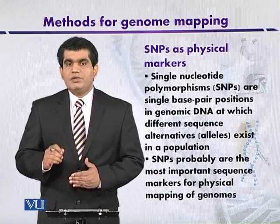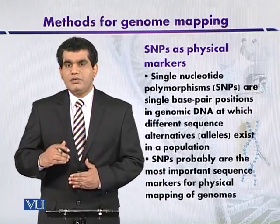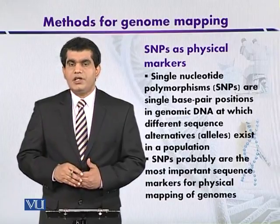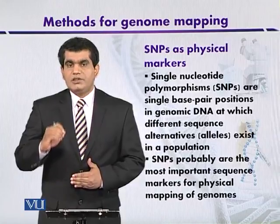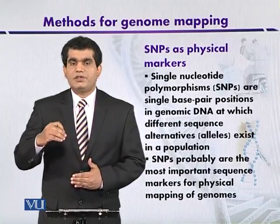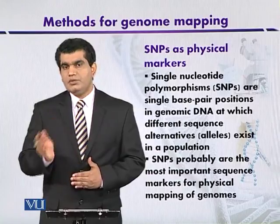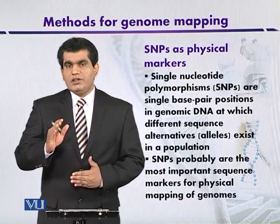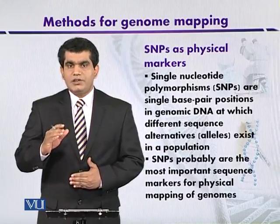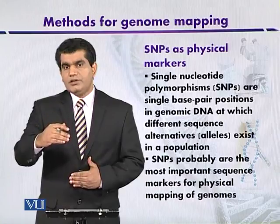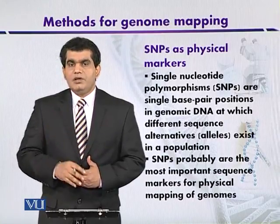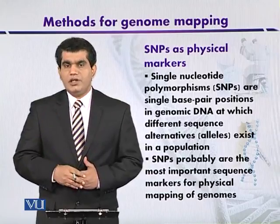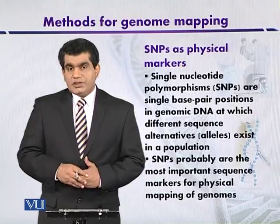If you remember, we discussed that 0.1% of the genome is variable from one human individual to another. These small variations can influence the target sites for different types of restriction enzymes, so that after digestion with a particular restriction enzyme we get a characteristic banding pattern. The fragments will be separated depending upon their lengths on agarose gel electrophoresis.